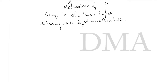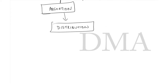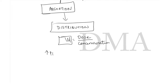After absorption, the drug is distributed. Volume of distribution equals dose divided by concentration. Higher plasma protein binding leads to a lower volume of distribution — another important MCQ.